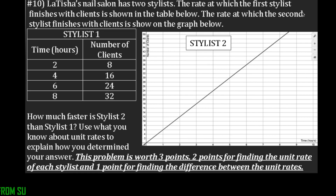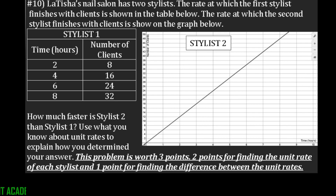It says Latusha Nail Salon has two stylists. The rate at which the stylist finishes with clients is shown in the table below, and the rate at which the second stylist finishes is shown in the graph below. The first stylist has a table where the x values are the time and the y values are the number of clients, and the same idea with stylist two. The number of hours is on the x-axis and the number of clients is on the y-axis. It says how much faster is stylist two compared to stylist one.